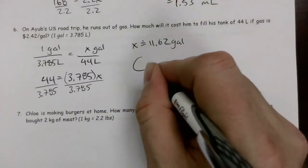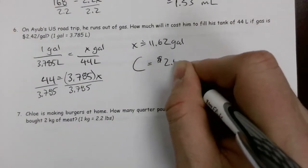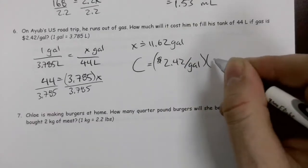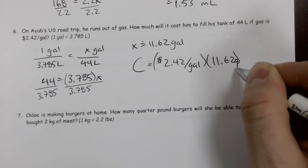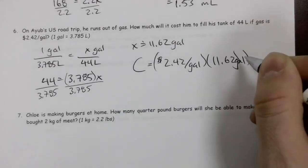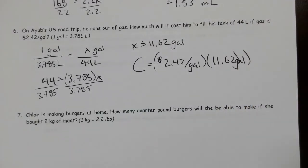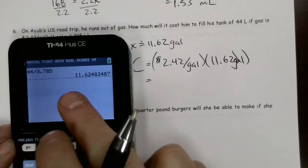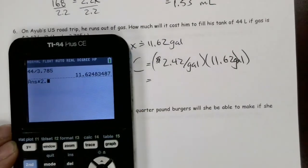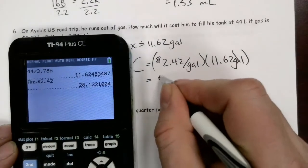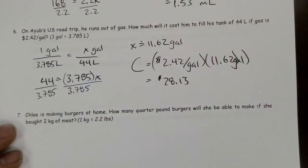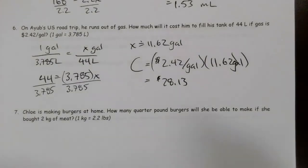The cost for gas is going to be $2.42 per gallon, and we're going to multiply that by our 11.62 gallons. I'm going to multiply that by 2.42, and we get $28.13.